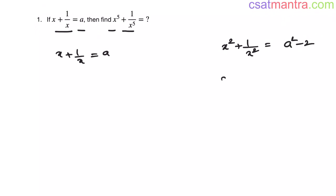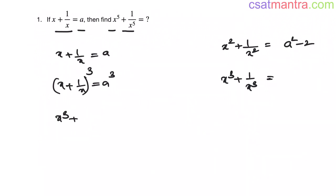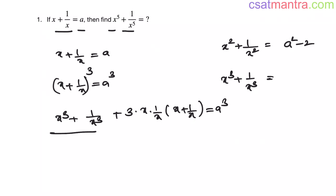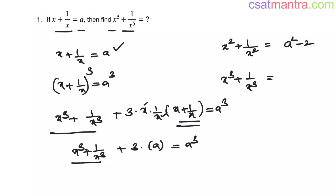We have also seen how to find x cube plus 1 by x cube. When you cube x plus 1 by x, using the a cube plus b cube identity: 1 by x cube plus 3ab into (a plus b). The x terms cancel, and 3 times x plus 1 by x equals 3a. So x cube plus 1 by x cube equals a cube minus 3a.